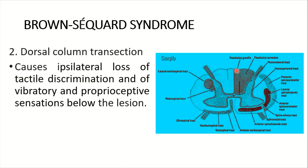Number two: dorsal column transection. This is the dorsal column medial lemniscus system. It causes ipsilateral loss of tactile discrimination, and of vibratory and proprioceptive sensations below the lesion.